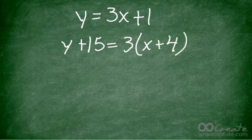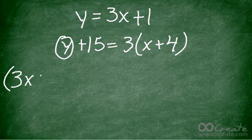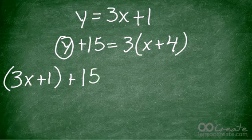Again, our first equation is already isolated, so I'm going to use substitution and substitute that first y into the second y. So I'm going to say 3x plus 1, which is y, plus 15 equals 3 times the quantity x plus 4.